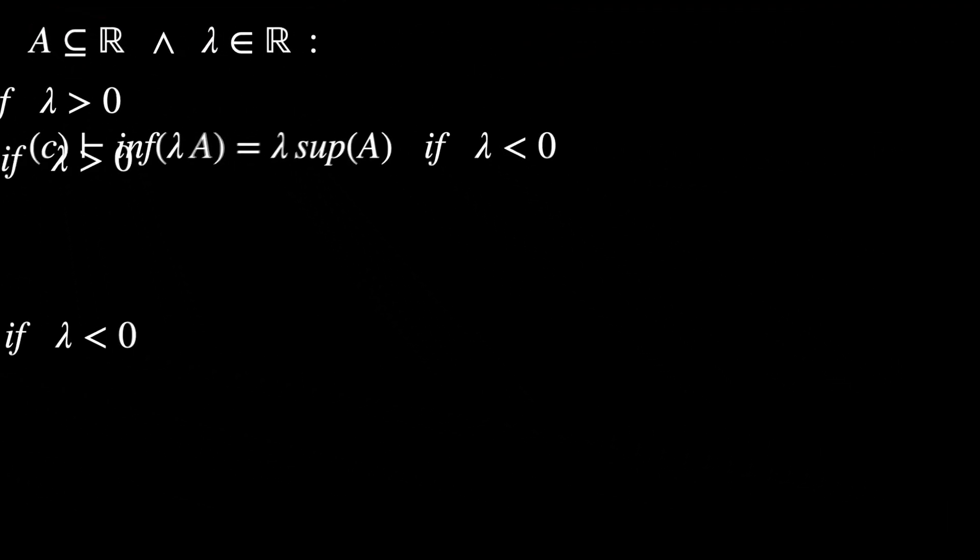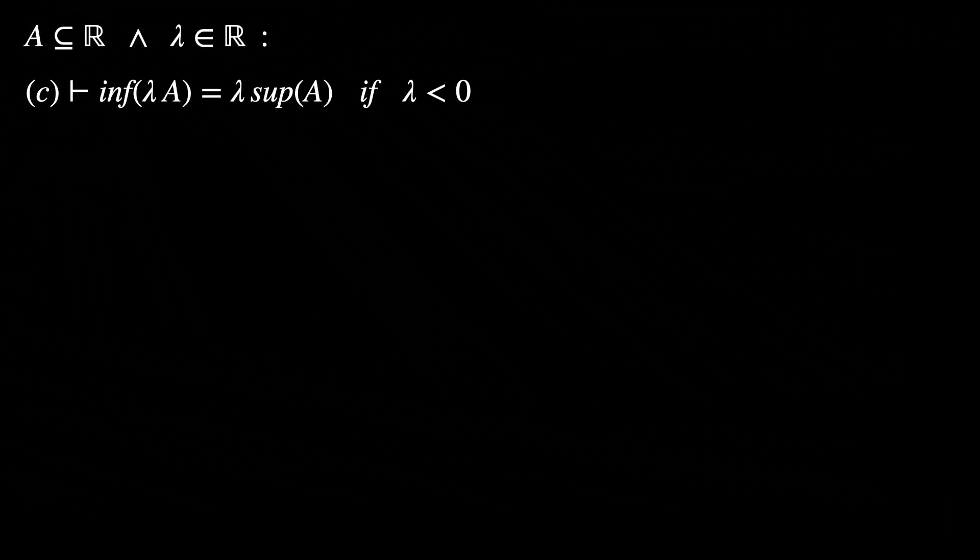Next, let's prove that the infimum of lambda A equals lambda times the supremum of A when lambda is less than 0. At this point you can try to prove it by yourself — it's a very good exercise. Before doing this, notice the following.